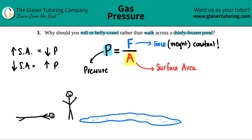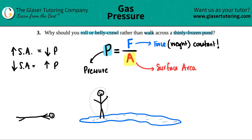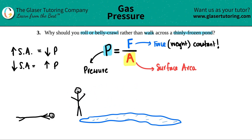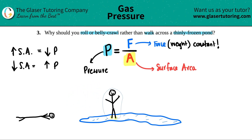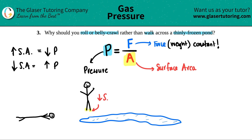Let's talk about the surface area of walking across the pond. What's really touching the ice? If I'm walking, only my feet are touching the ice. I have all of this weight resting on my feet. Since it's only my feet, I have a really low surface area, with this whole body applying pressure on the ice — so low surface area means high pressure.